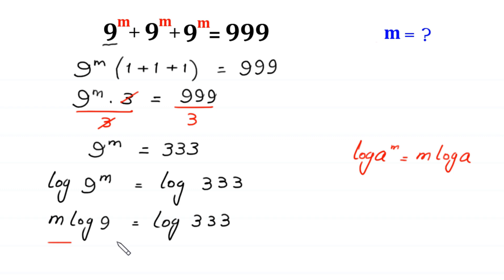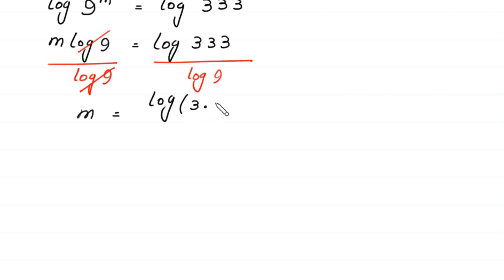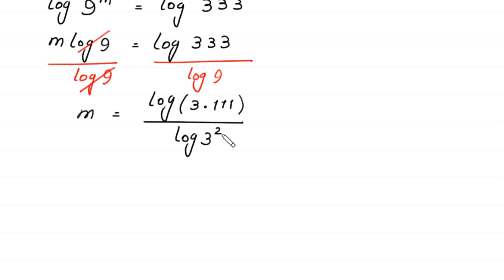Now from here we divide both sides by log of 9. This log of 9 will be cancelled out with this log of 9, and at the left side we are left with m is equal to log of 333 divided by log of 9. This log of 333 can be written as log of 3 times 111, divided by log of 3 squared.